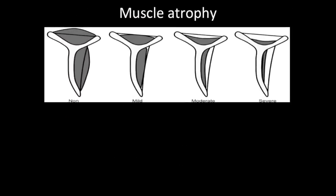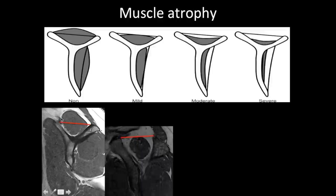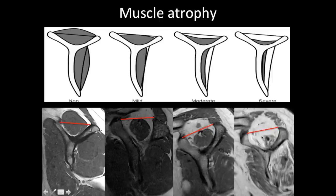Muscle atrophy is assessed using a reference line joining the coracoid process to the spine of the scapula for supraspinatus, and the spine of the scapula to the inferior tip of the scapula for infraspinatus. In a normal muscle the muscle bulk extends above the line; mild atrophy — the muscle extends to the line; moderate atrophy — the upper margin of the muscle is below the line; severe atrophy — the muscle is situated in a corner of the supraspinatus fossa.